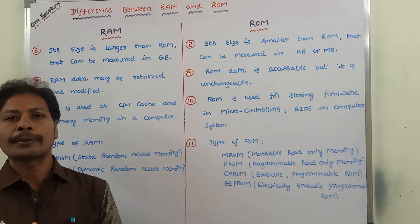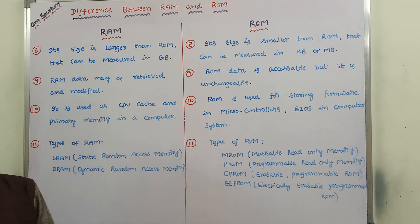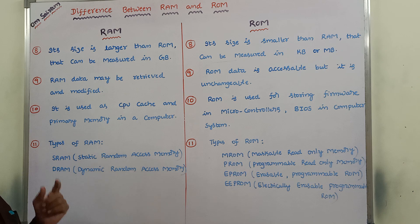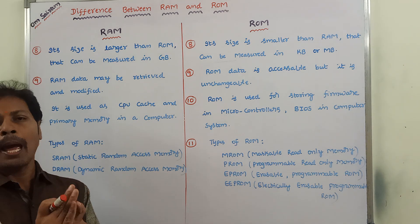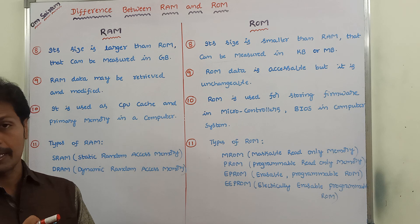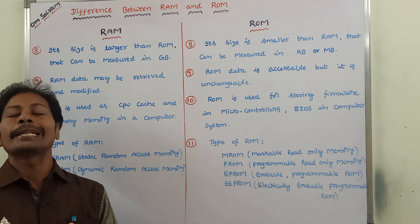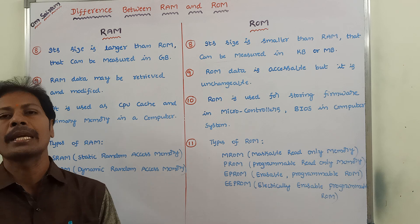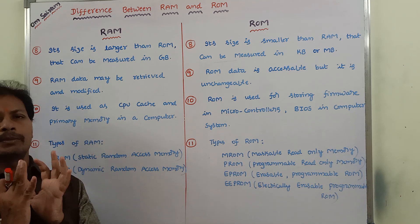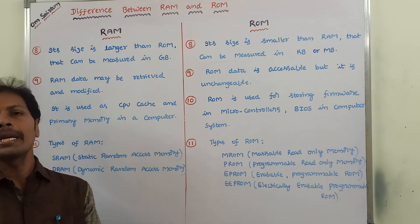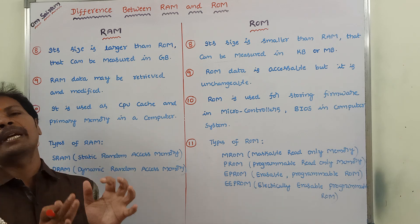Whereas, in the case of RAM, data stored in RAM can be both accessible and modifiable. Next point: RAM is used as CPU cache and primary memory in a computer system. Cache is also a memory — it is a part of RAM, it is a high-speed memory, and it sits between the CPU and main memory.